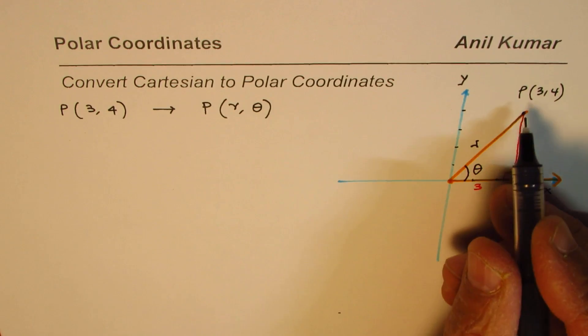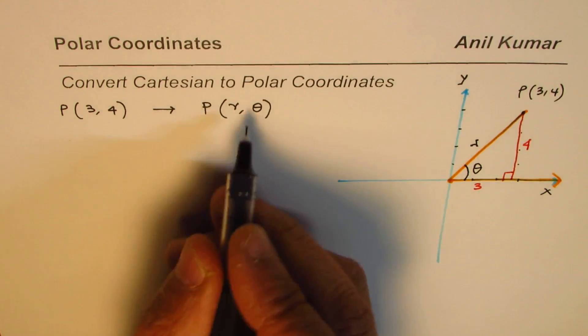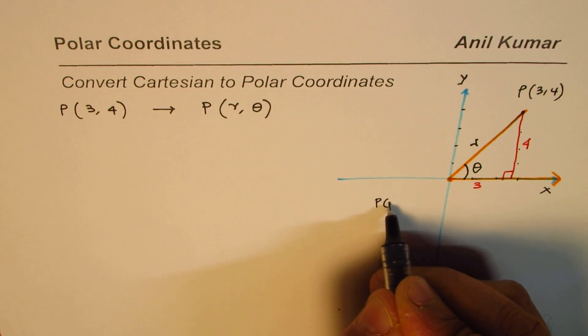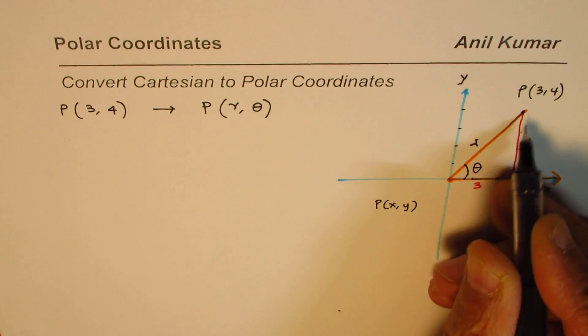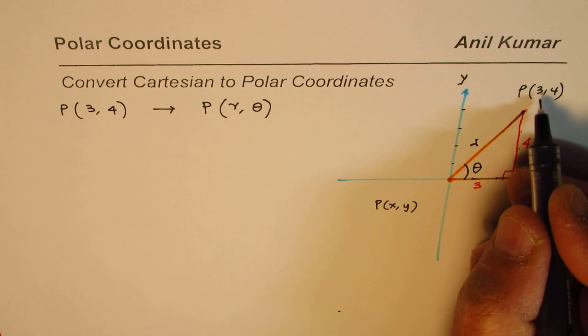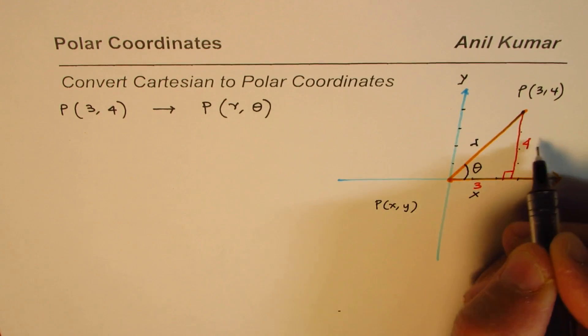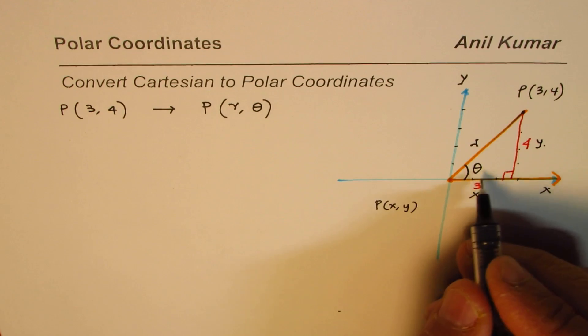Now, in general, let's take a general description and then we'll do this particular example also. In general, any point P, which is x and y. So if I replace this point with x and y, in this case, that value will be x and this value will be y, correct?